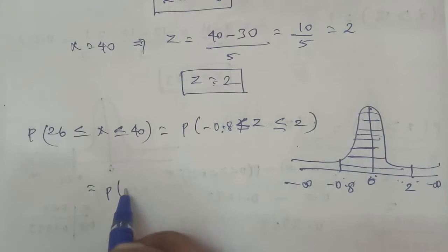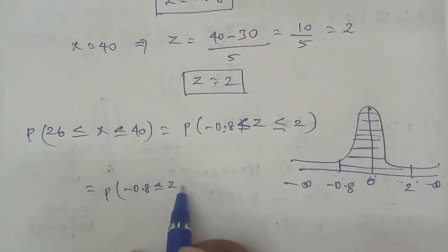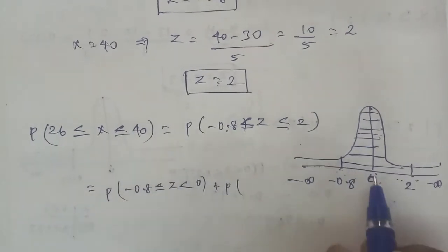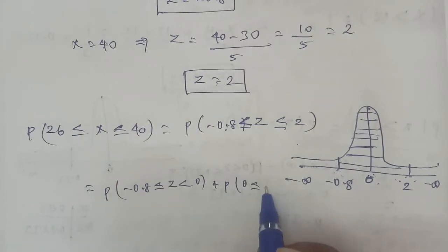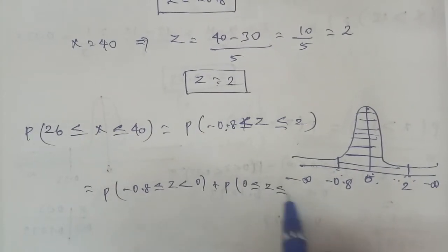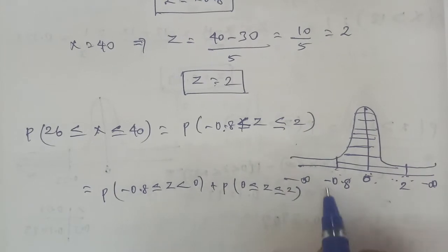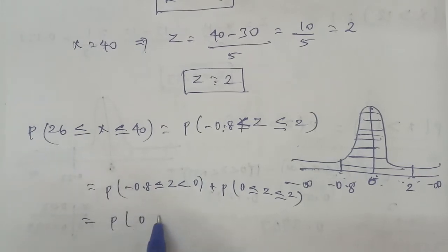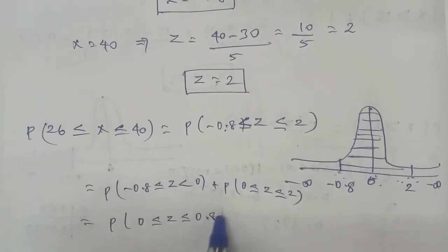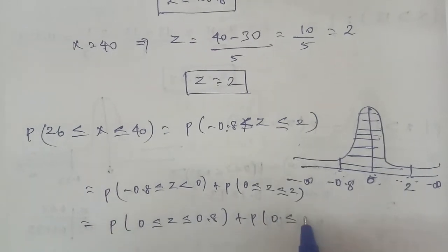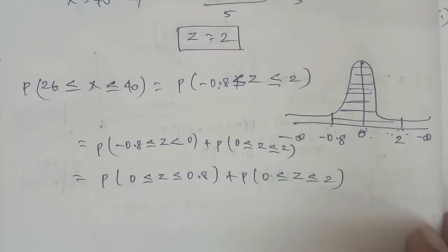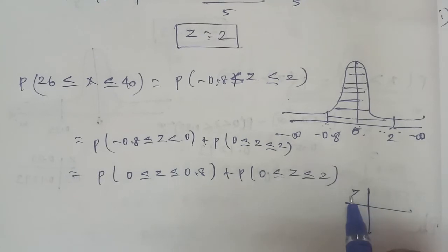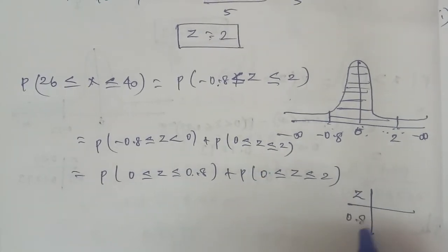So P(-0.8 ≤ Z ≤ 0) is one portion, plus the probability of 0 ≤ Z ≤ 2 is the next portion. That is P(0 ≤ Z ≤ 0.8) plus P(0 ≤ Z ≤ 2). Looking up in the normal distribution table, for Z = 0.8, the column is 0.00.